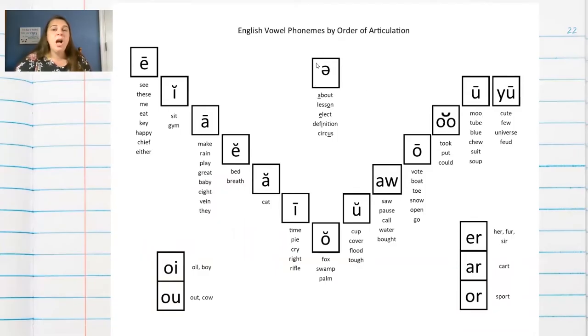Again, we have schwa up here hanging out all by itself because, you know, it's just a little different. And then we start here with a nice, you can put your hand under your chin, a nice high smiley ee. And then our chin goes down a little bit and we have the ih sound, ih.